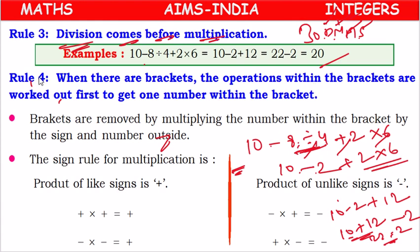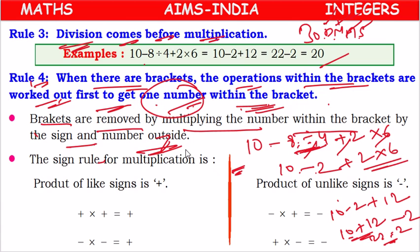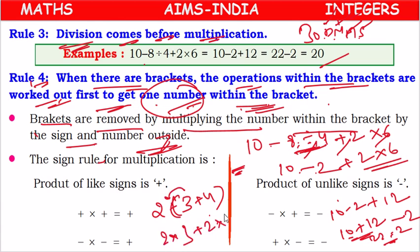Rule 4: When there are brackets, the operations within the brackets are worked out first to get one number, so that we can remove the brackets. Once we get one number within the bracket, brackets are removed by multiplying the number inside the bracket by the sign and number outside. For example, 2 times (3 plus 4) means the inside terms are multiplied with the outside term: 2 times 3 plus 2 times 4.